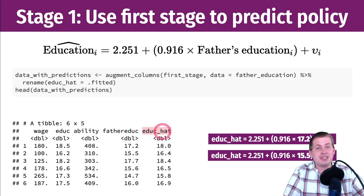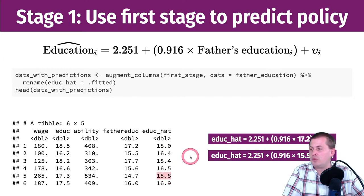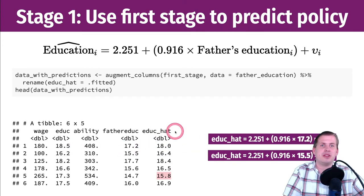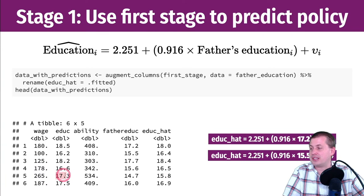This education-hat column is the exogenous part of education — it won't always equal observed education. One person had 18.5 years; the model predicts 18. Another had 17.3 years; the model predicts only 15. Any difference between observed and predicted education is due to ability and other unmeasured confounders that are changing the person's actual level of education. Education-hat is purely the exogenous part.